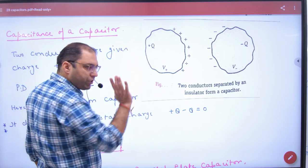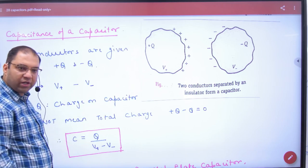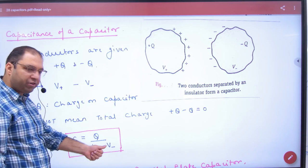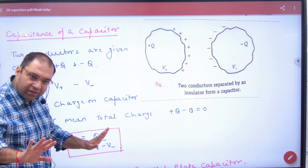V positive minus V negative, what is it? Result clear?